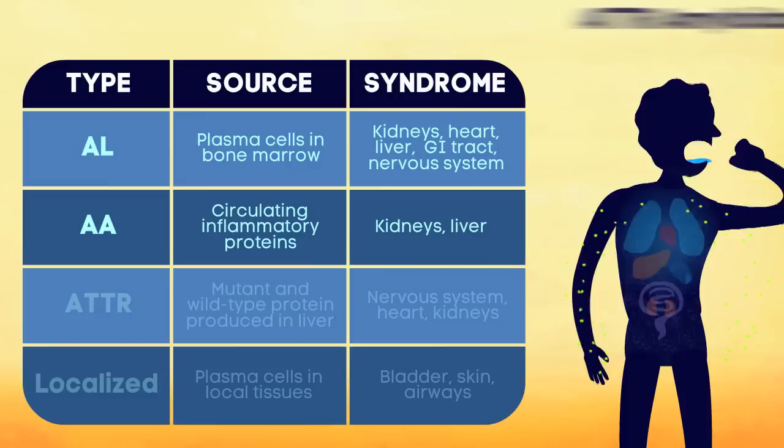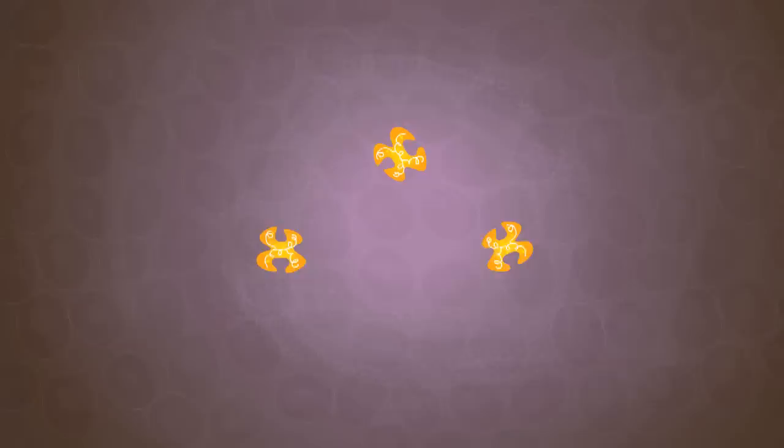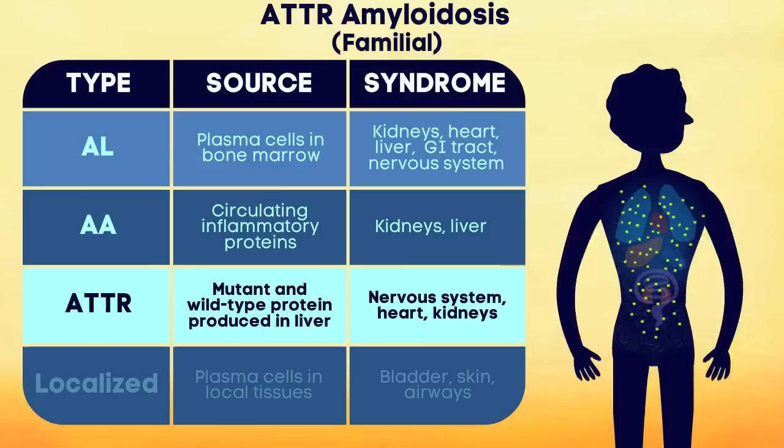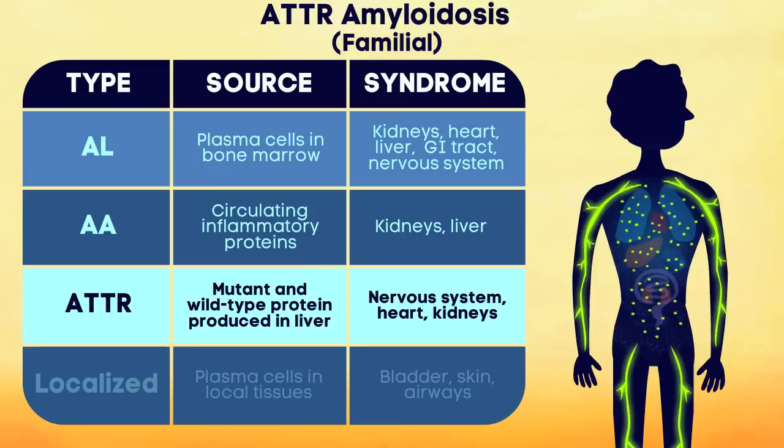In ATTR amyloidosis, the amyloid originates from the transthyretin protein, which is produced in the liver. In hereditary or familial forms of the disease, there are over 100 genetic mutations already discovered as contributing to amyloid formation, which primarily cause nerve damage and heart problems.